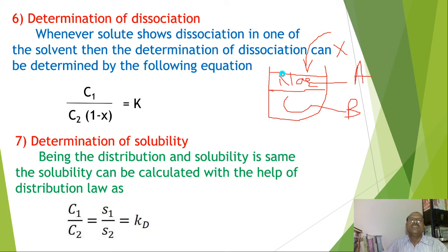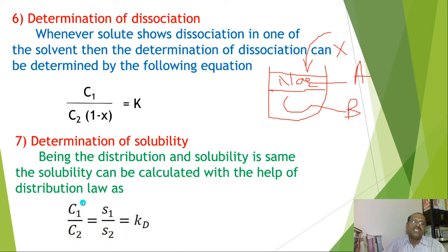This is the application of the distribution law. The next application is the determination of solubility. Solubility and distribution law are more or less one and the same. Solubility can be calculated with the help of distribution law: c₁/c₂ = Kd. But c₁/c₂ is nothing but s₁/s₂ = Kd. Therefore, the solubility of the solute can be calculated with the help of distribution law.